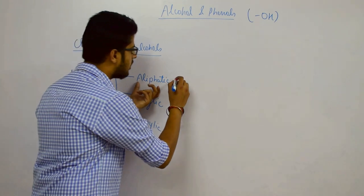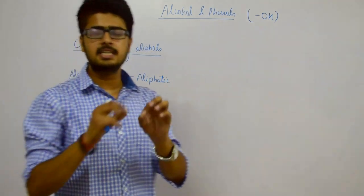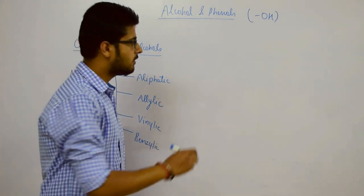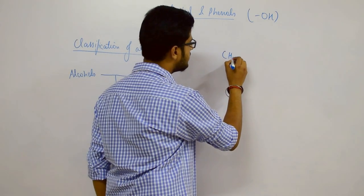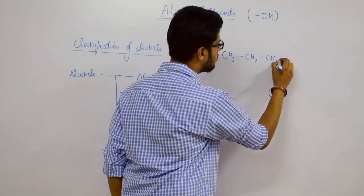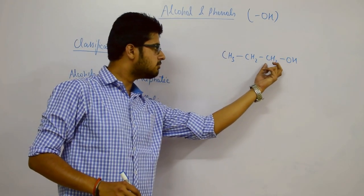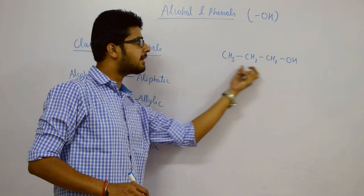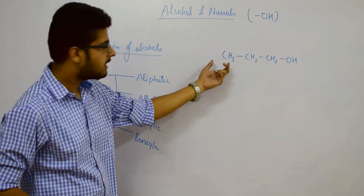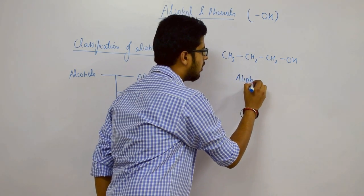Aliphatic alcohols are those where the OH group is attached to a straight carbon chain. For example, CH3-CH2-CH2-CH2-OH, where the OH group is attached to a straight chain of carbon atoms — this is an example of an aliphatic alcohol.